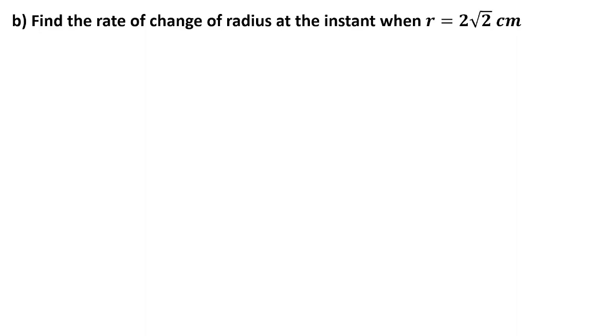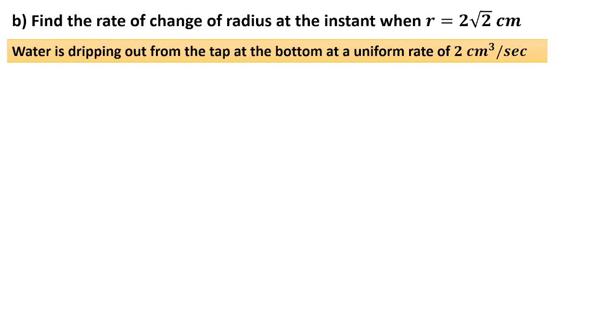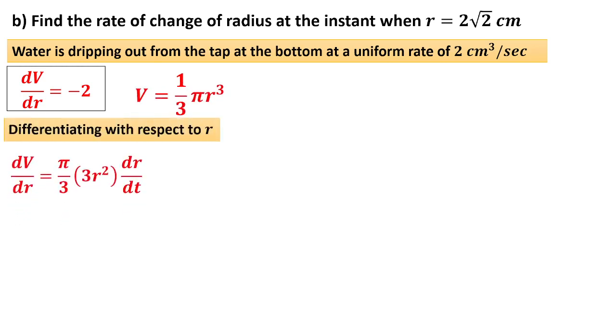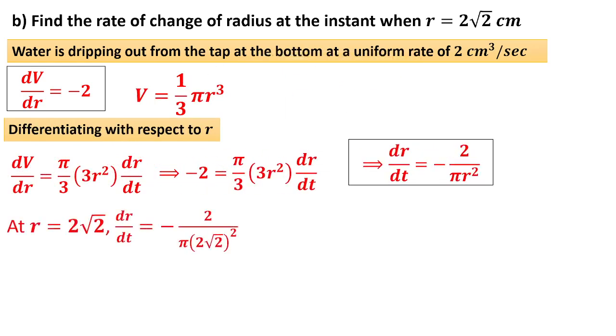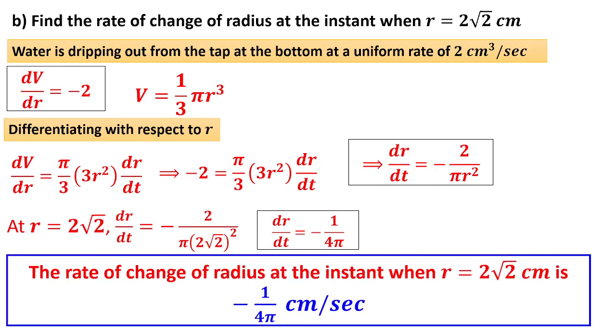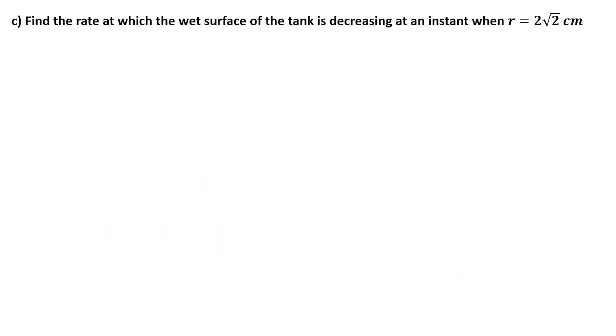Find the rate of change of radius when R equals 2√2. Water is dripping out, therefore dV/dt should be taken as -2 because it is decreasing. Volume formula is known. Differentiating it, I know what is dV/dr. Putting it, I found dr/dt. They want what happens when R equals 2√2. Substituting, I am getting -1/(4π) centimeter per second as the rate of change.